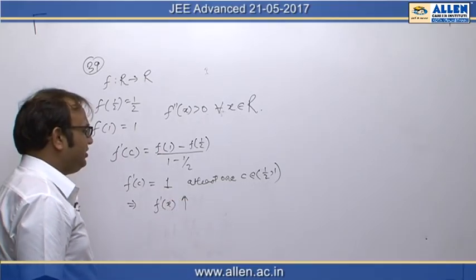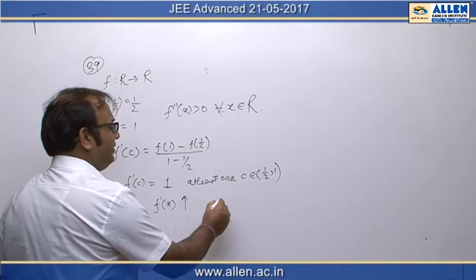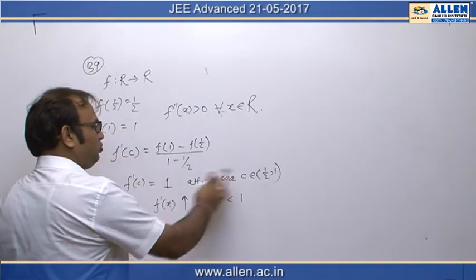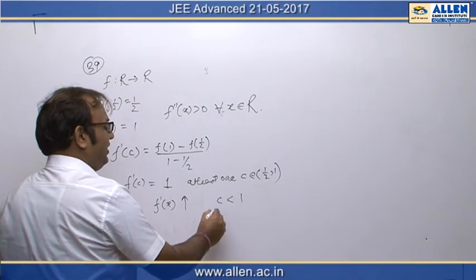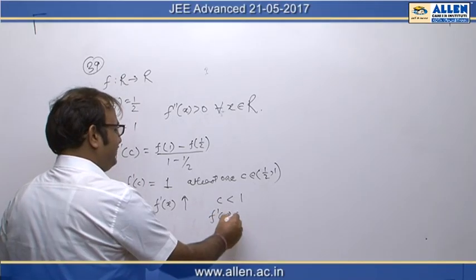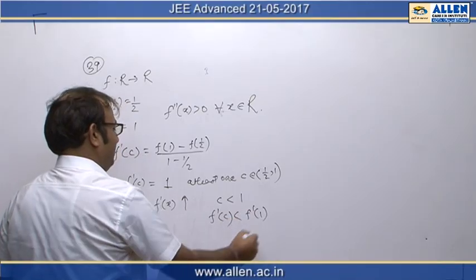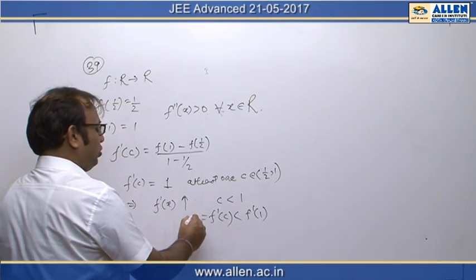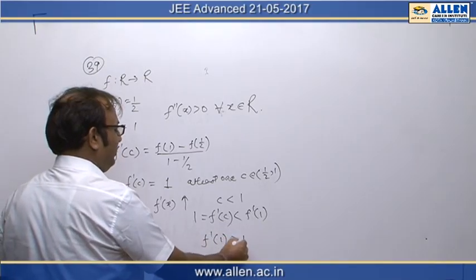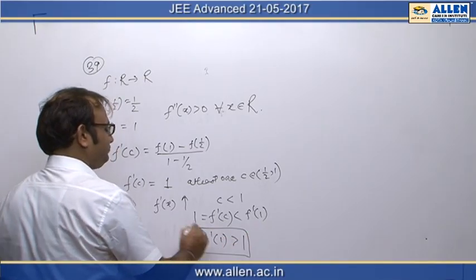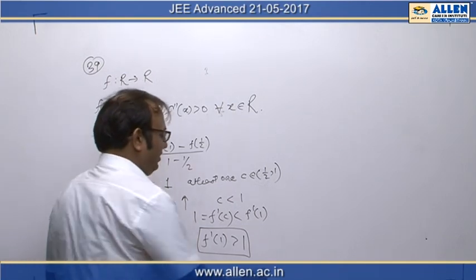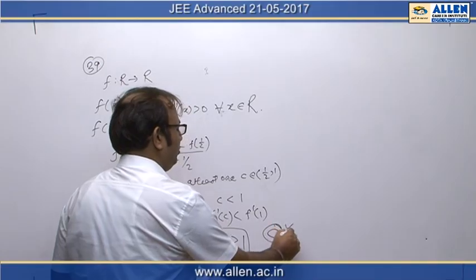Since f dash x is an increasing function and c is less than 1 because it belongs to the open interval (half, 1), f dash c is going to be less than f dash 1. Since f dash c has been obtained as 1, we can say that f dash 1 is bound to be greater than 1. So option C is going to be the correct option.